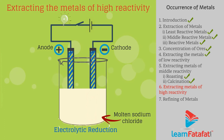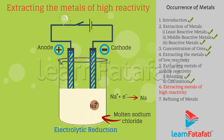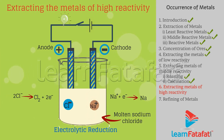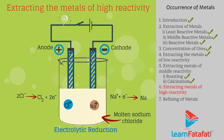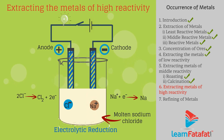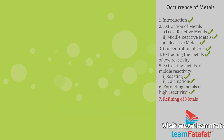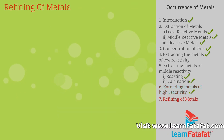During electrolysis, sodium is collected at the cathode: Na⁺ + e⁻ → Na. And chlorine gas is liberated at the anode: 2Cl⁻ → Cl2 + 2e⁻.